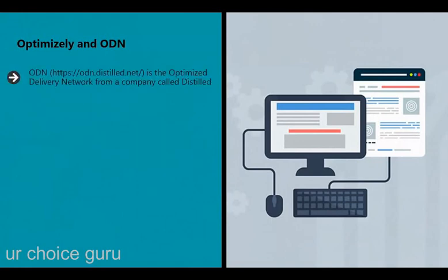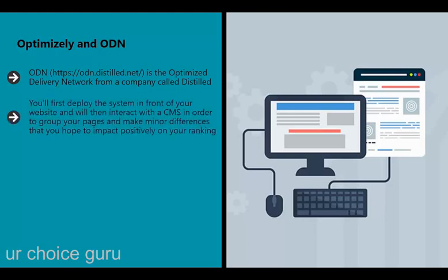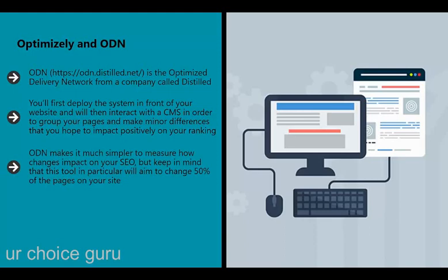ODN (https://odn.distilled.net) is the Optimized Delivery Network from a company called Distilled. This tool allows you to much more easily utilize split testing for your site by grouping different versions of web pages. You deploy the system in front of your website and interact with the CMS to group pages and make minor differences you hope will impact positively on your ranking. ODN makes it much simpler to measure how changes impact your SEO, though keep in mind it will aim to change 50% of the pages on your site - which might be a little more than optimal. That said, ODN is one of the best options for those who want to get started with split testing without tinkering with their website or hiring a developer.